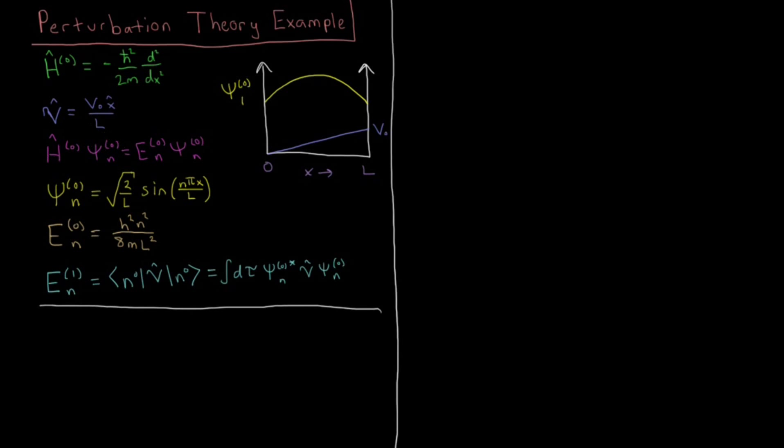Our reference system, which we can solve exactly, is the particle in a box, which is this H-naught psi-naught equals E-naught psi-naught. Our reference Hamiltonian is the particle in a box Hamiltonian, just the kinetic energy.